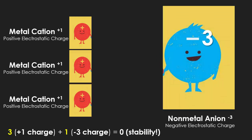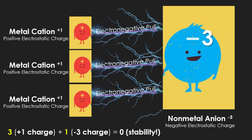Now, what happens if we have a nonmetal with a negative three charge? One negative three anion — which could be nitrogen, phosphorus, or arsenic — would require three of the positive one cations to bind to it. You would need three positive one cations to neutralize one negative three anion. The electronegative pull pulls the cations towards the anions, thus making a bond.